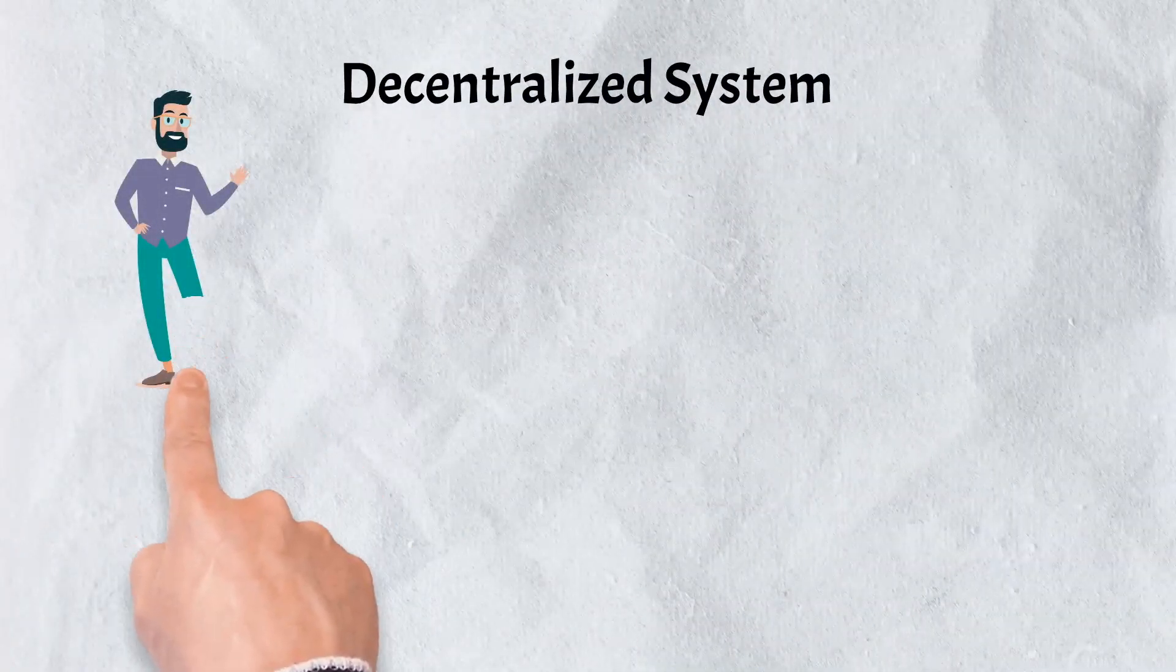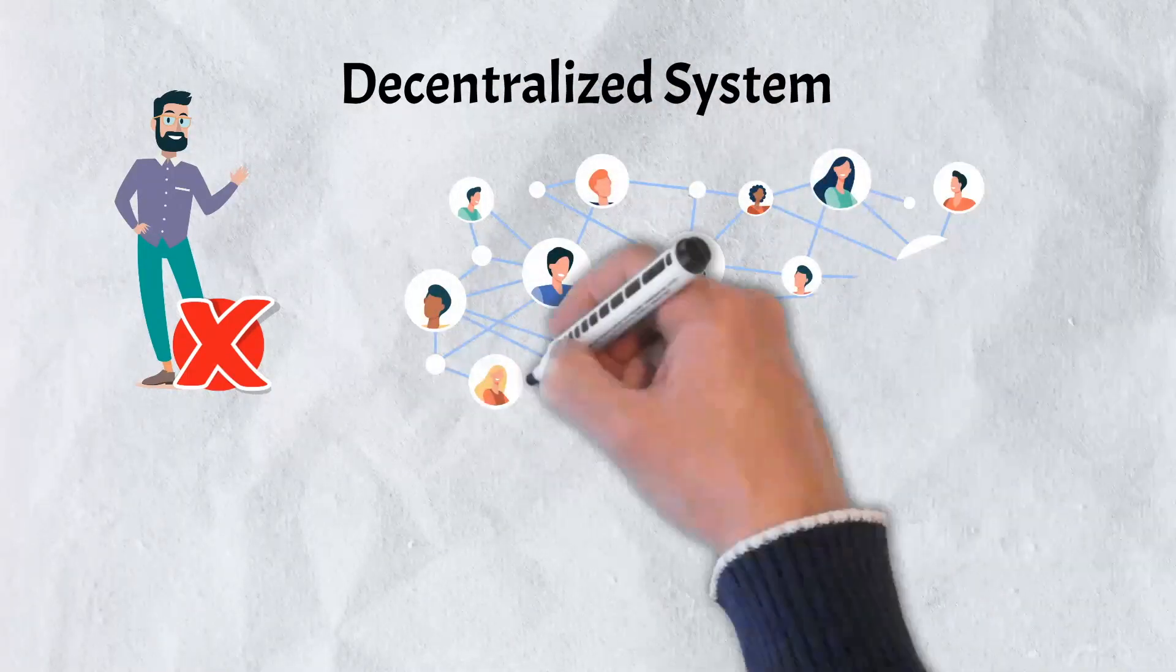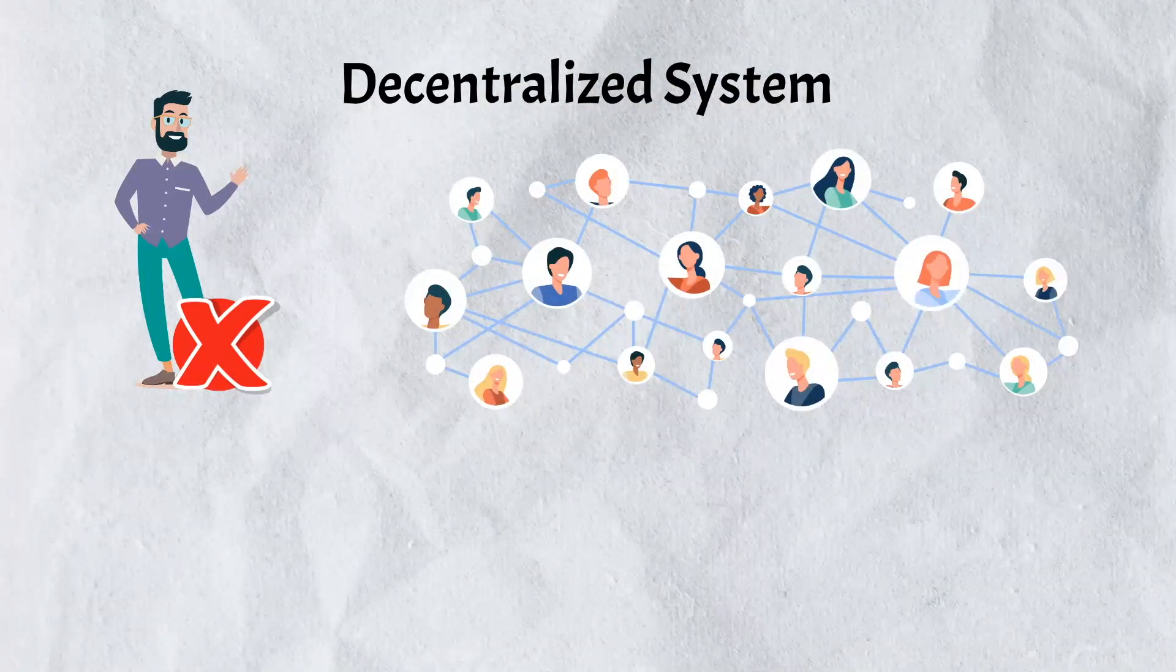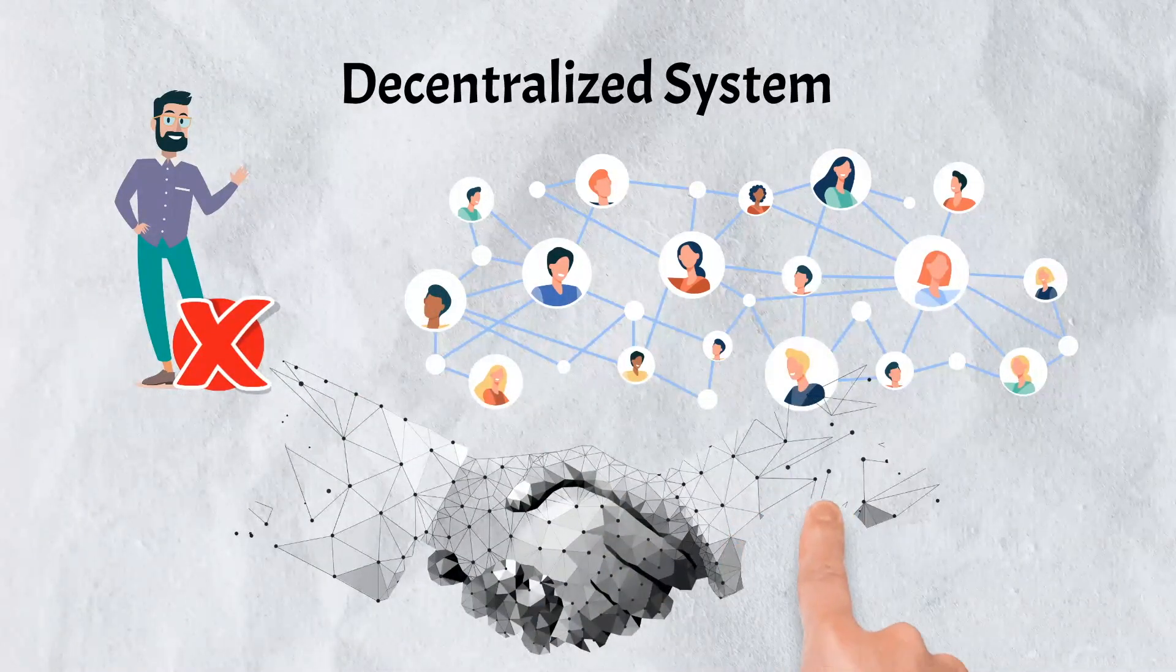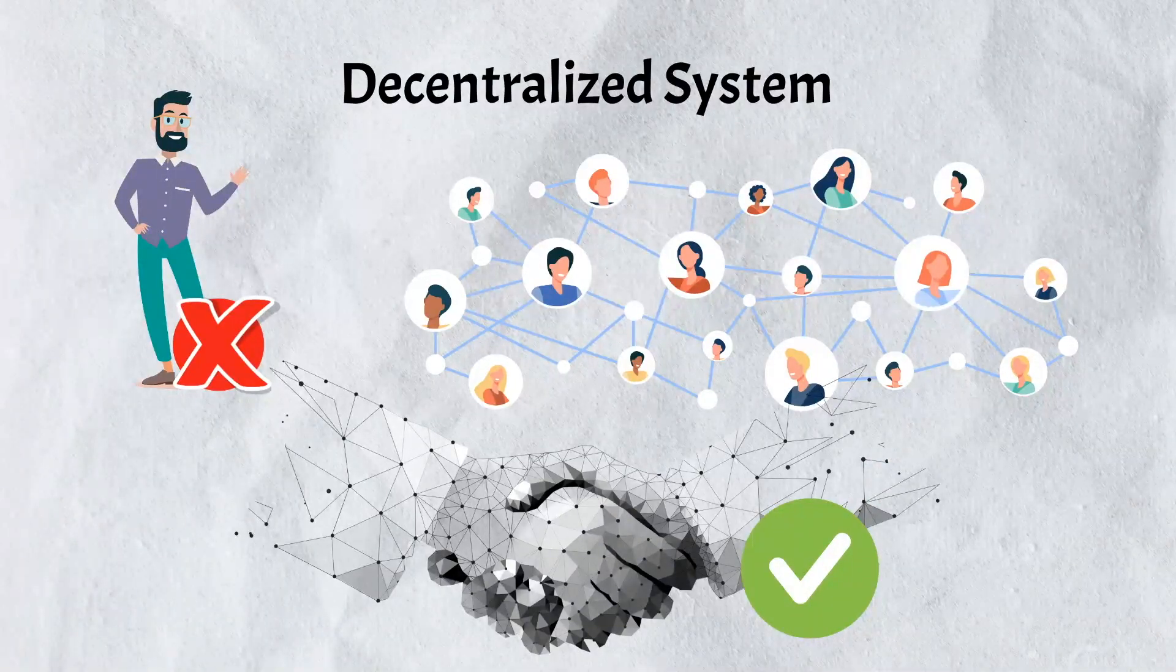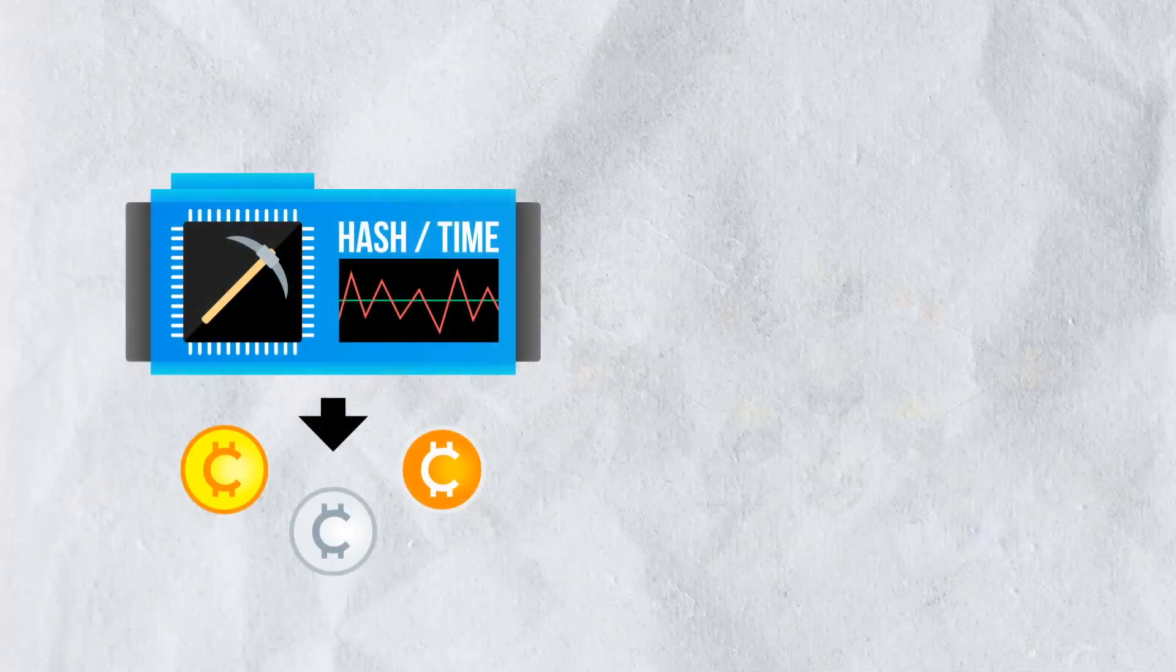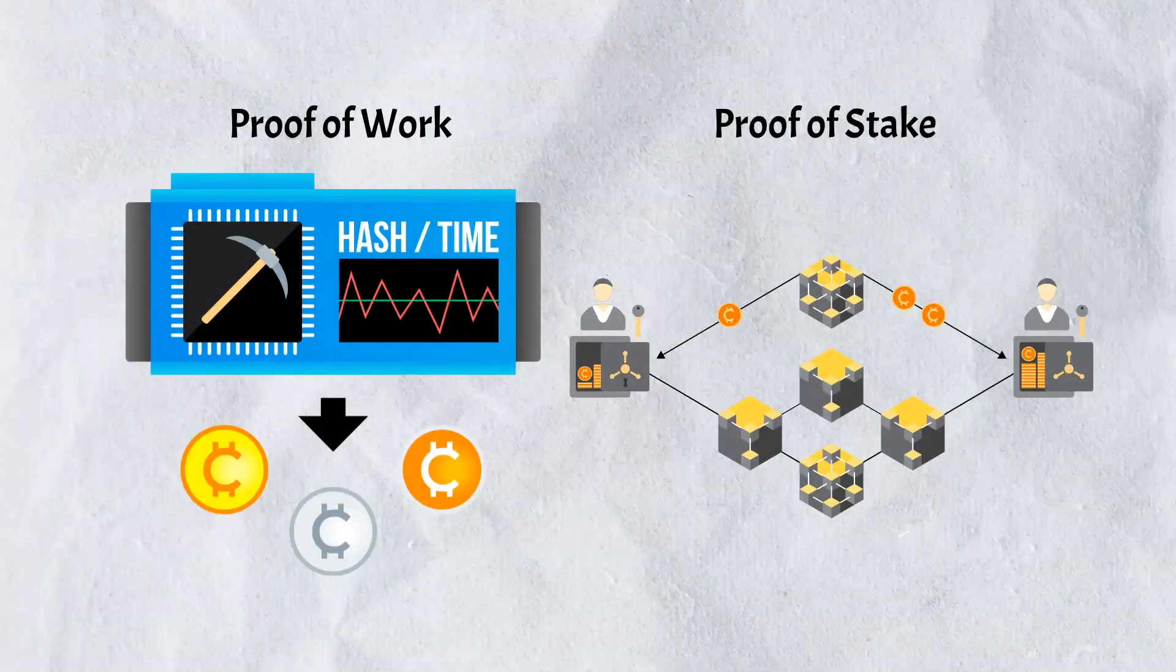In a decentralized system, there is no central administrator or authority figure. The task of updating and verifying information is distributed amongst hundreds of thousands of participants. As such, a consensus mechanism is needed as a standard that all participants can agree upon to verify transactions. While there are many different types of consensus mechanisms, the two most popular are proof-of-work and proof-of-stake.